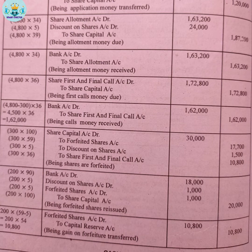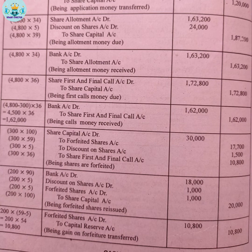Re-issue of 200 shares: 200 shares are re-issued at Rs.90, fully paid. The calculation is 90 + 5 − 100 = −5, meaning there is a shortfall of Rs.5 per share on re-issue. The total credit for the re-issue entry is Rs.20,000.